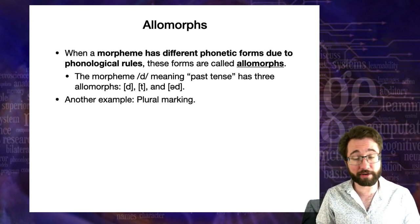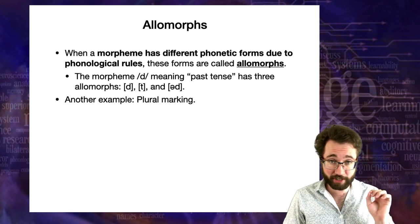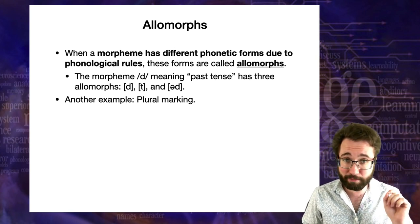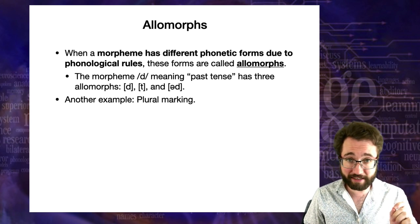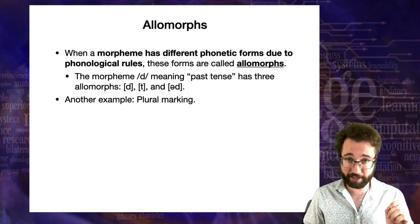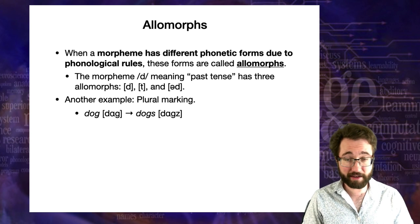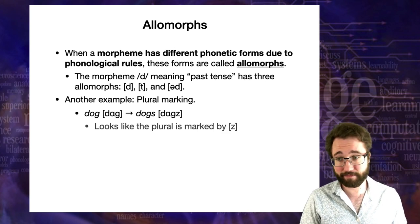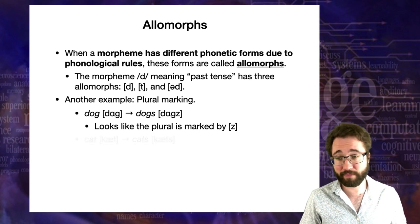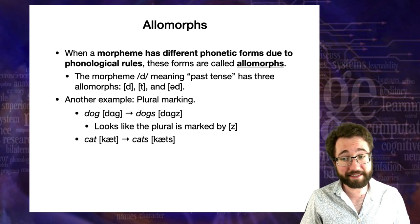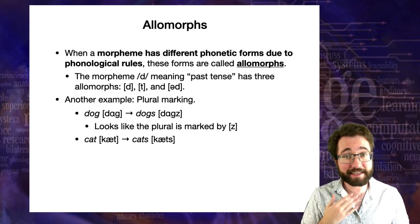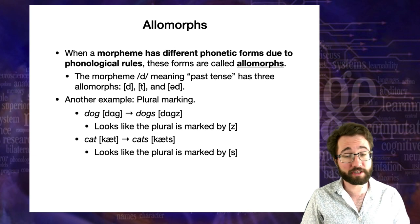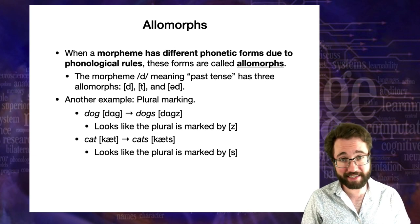Another example is plural marking in English — again, be careful not to be misled by spelling; we're doing a phonemic analysis of English as a spoken language. The word 'dog' has the plural 'dogs' with a voiced Z sound at the end. The word 'cat' has the plural 'cats', which is unvoiced — the plural is marked by an unvoiced S.